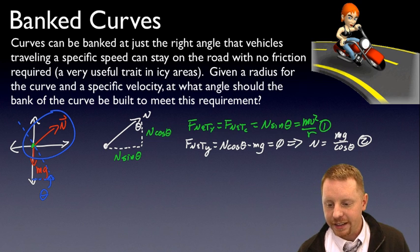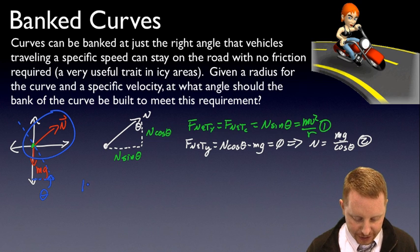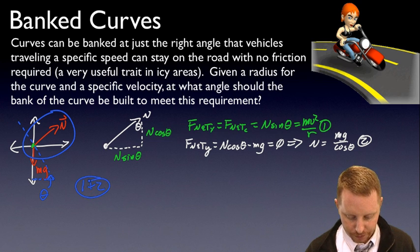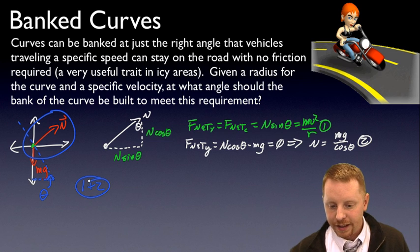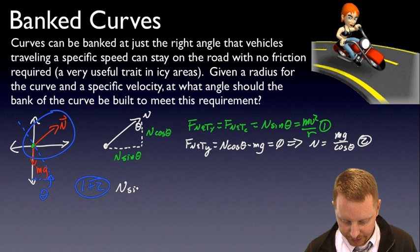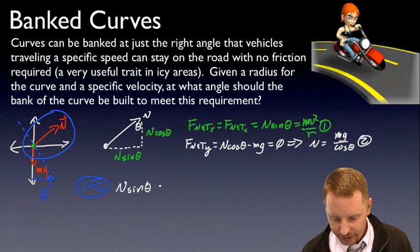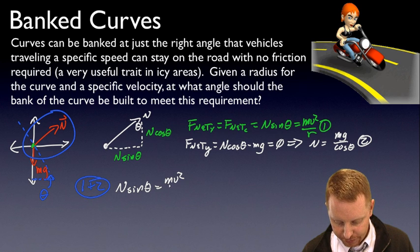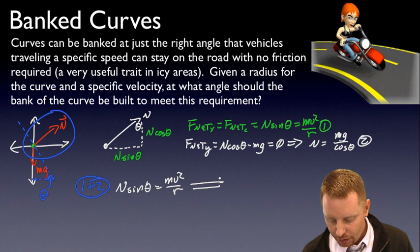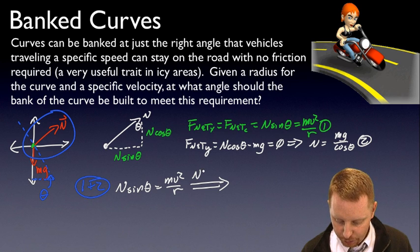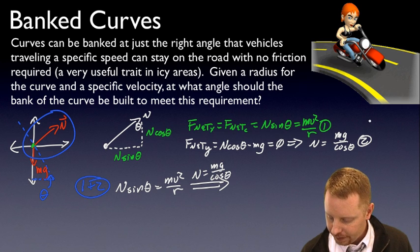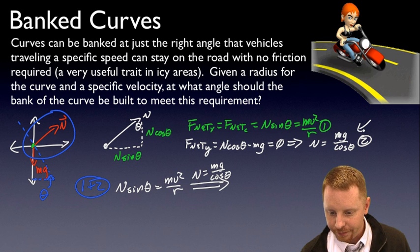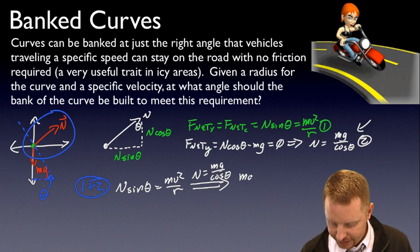Now as I take those two, I can put them together, I can combine equation one and two, and I can write that as N sin theta equals mv squared over r, which implies, because we know that N equals mg over cos theta, that's our equation two right there, that mg sin theta over cos theta must equal mv squared over r.